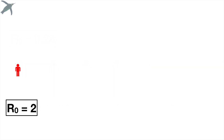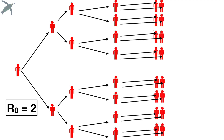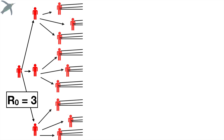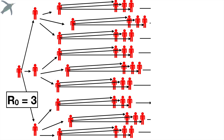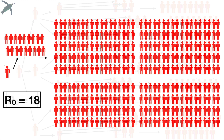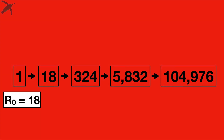When R-naught is greater than one — let's say R-naught equals two — each person infects two people, and those two people infect two people, and so on. You can see how the number of cases will increase over time, and it only gets worse the bigger that R-naught value gets. With R-naught equals three, after the same number of cycles, you've got 81 people infected. If you look at something like an R-naught of 18, these numbers get very big, very fast.